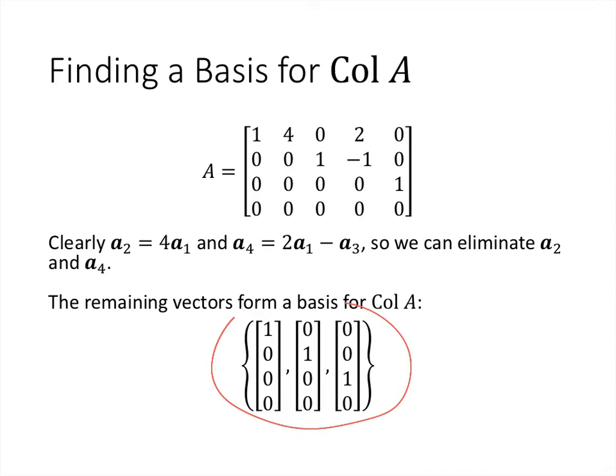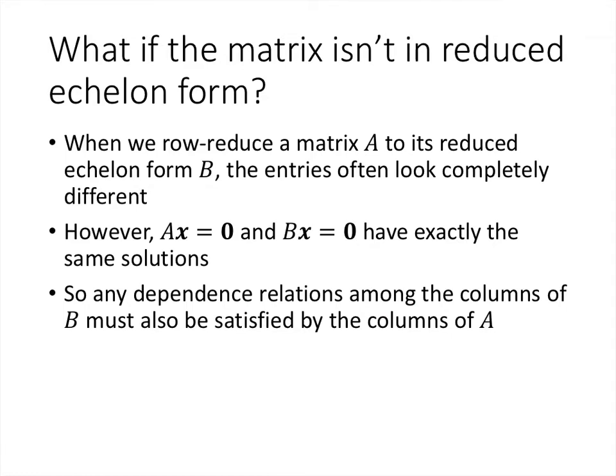But this raises the question: how would we do this for a matrix that isn't in reduced echelon form? This matrix was in reduced echelon form, and it was pretty easy to see the dependence relations between the columns. But what about a general matrix where it's harder to see those relationships? The key idea is that when we row reduce a matrix A to its reduced echelon form B, the entries are going to look completely different, but the relationships between the columns are going to be the same in both matrices.